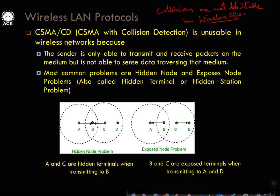Within the radio range of A, I have stations A and B, but C is not present within the radio range of A. Within the radio range of C, I have station B and D, but A is not present within C's range — meaning A cannot send data to C, and C cannot receive data from A and vice versa. Because of this, what problems are we going to have?